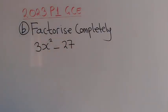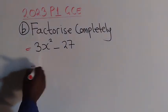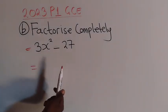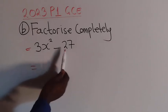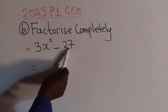Factorize completely. So how can we factorize this expression? To factorize an expression like this, we need to take note of the common numbers. So we have a 3 right here, we have a 27. Then in terms of the variables, we only have x, here there is no variable.